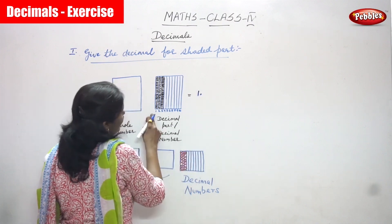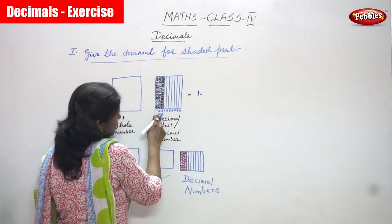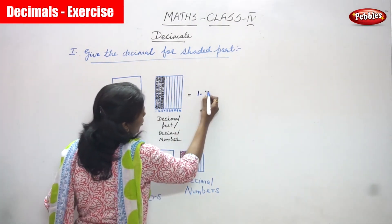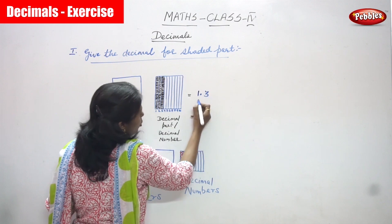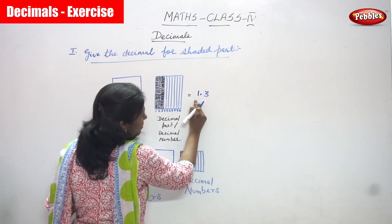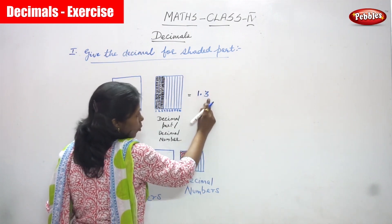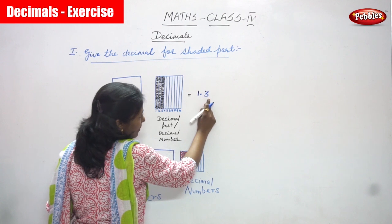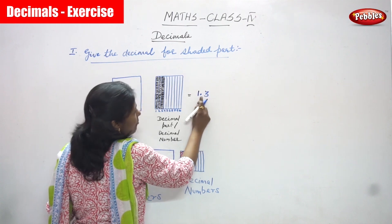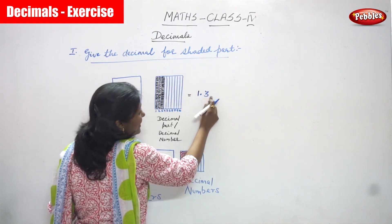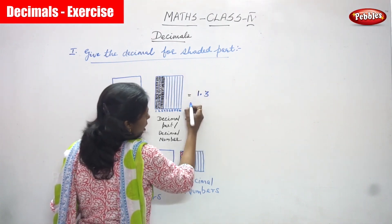How many decimal parts are shaded? One, two, three. So the answer is one point three. One is a whole number, this is a decimal point, and three is the decimal part. After the point, we can call it as three tenths.